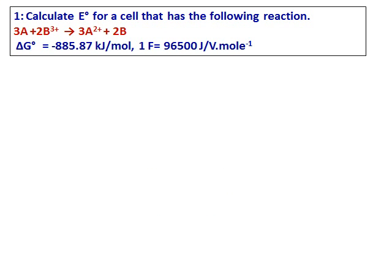Calculate E° for a cell that has the following reaction. Delta G° is given and one Faraday, the value of one Faraday is also given. The equation we will be using will be delta G° equals minus NFE° cell. So to calculate the E° cell, delta G° is given, F is given, we need to get the value of n.